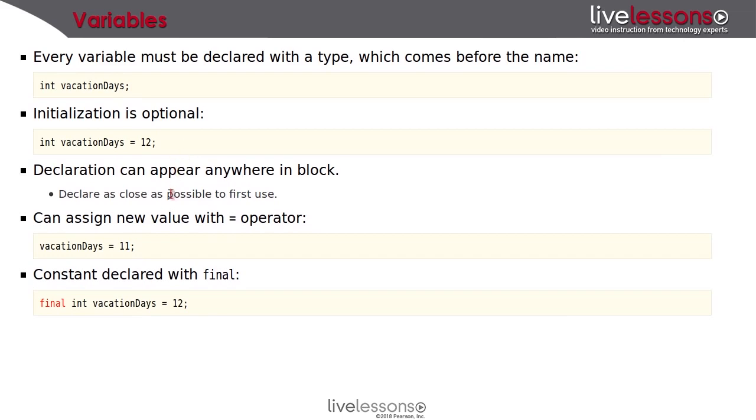Once a variable has been declared, you can reassign a value. Here for example, we're changing the value of vacation days to 11. If you don't want that, if you want a variable to always have the same value, you declare it as final. So that's the same as const in other languages. Final makes a variable into a constant. The word final means that once the variable has been initialized, then that's the final time that you had a chance to change it.